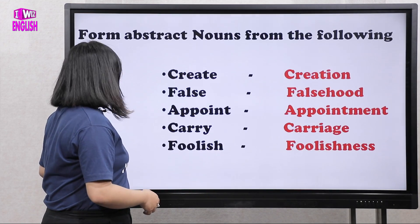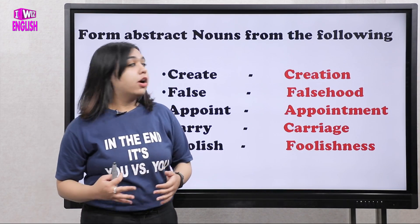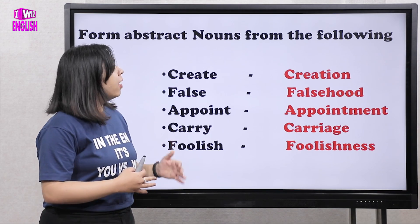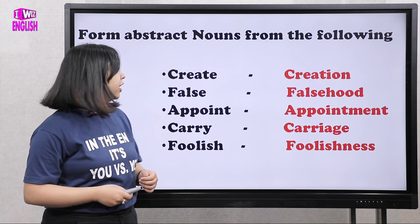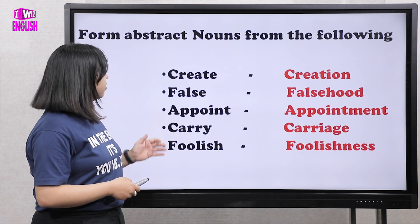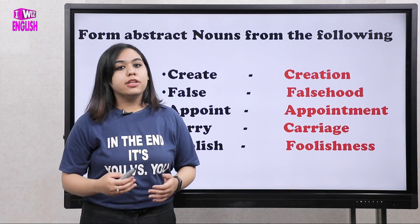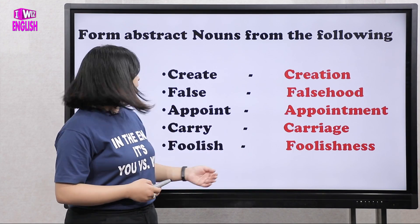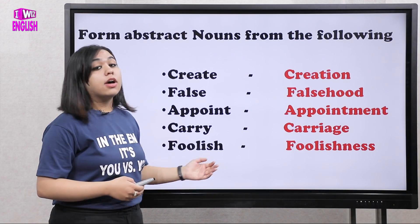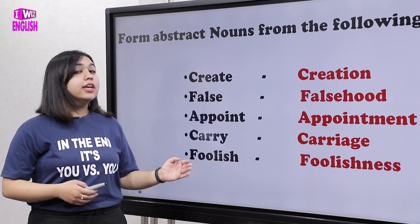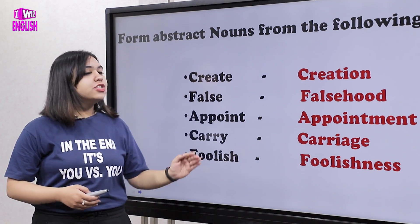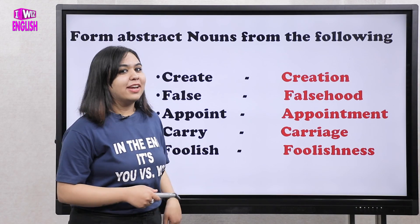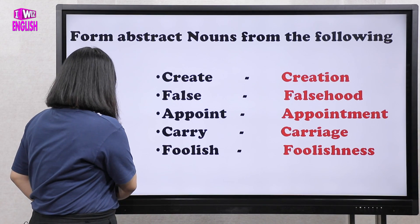The first question was about forming abstract nouns. Here are the answers: create → creation, false → falsehood, appoint → appointment, carry → carriage, and foolish → foolishness. I hope that you've done them right — you can check them.